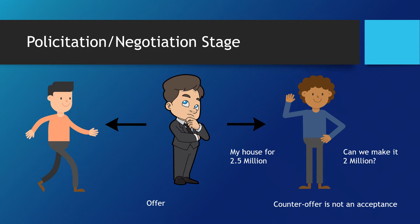At any time prior to the perfection of the contract, either party may stop the negotiation. At this stage, the offer may be withdrawn. The withdrawal is effective immediately after its manifestation.